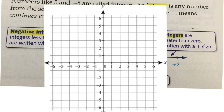Which number is bigger, 1 or 3? Which number is bigger, 4 or 5? 5 — we know the number is bigger because it is farther to the right on the number line. So now, which one of these is bigger, negative 3 or negative 2? Negative 2 is bigger because it is farther to the right. That can get a little confusing, so make sure we keep all of that straight.